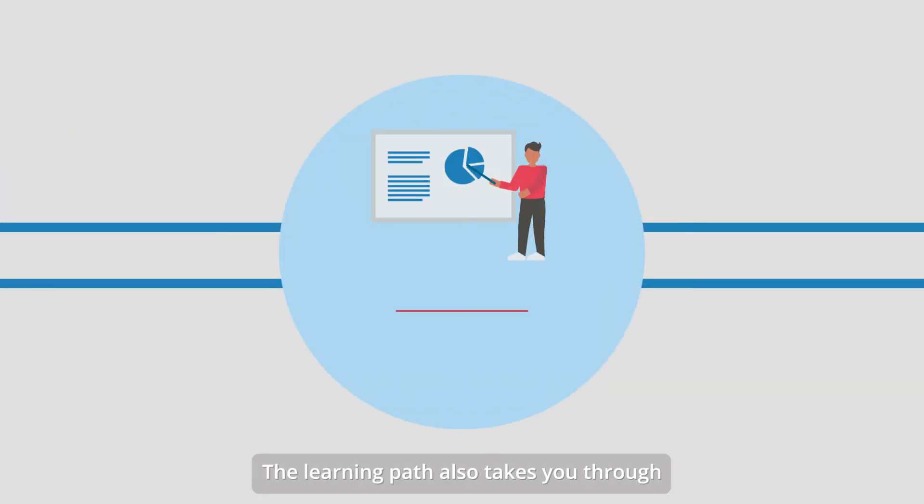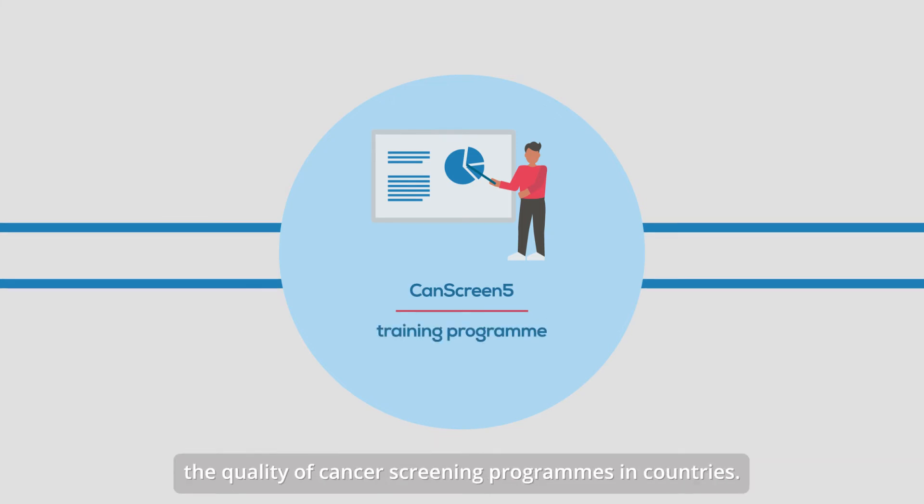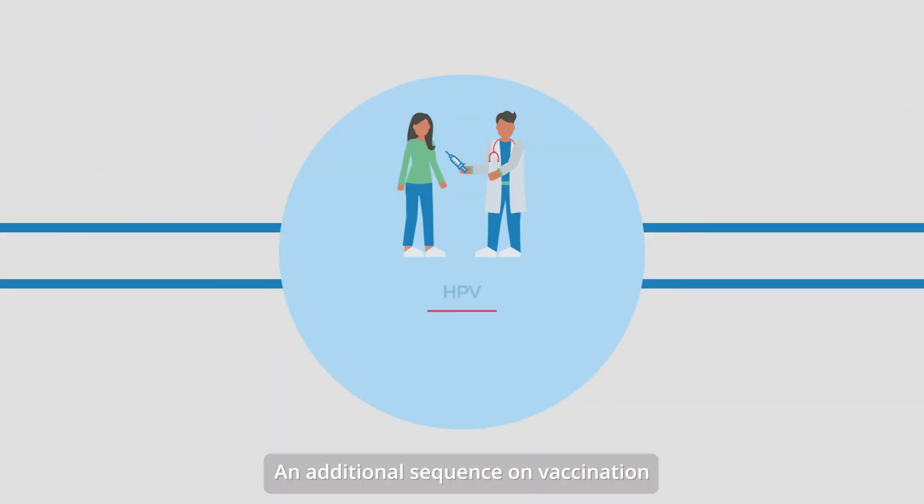The learning path also takes you through the CANSCREEN 5 training programme to understand which measures can improve the quality of cancer screening programmes in countries. An additional sequence on vaccination against human papillomavirus or HPV complements the overview of primary prevention strategies.